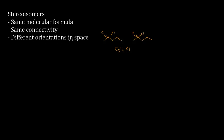Now if we analyze their orientations in space, notice something funky going on: this chlorine is pointed towards me while this chlorine is pointed away from me. And this hydrogen is pointed away from me, but over here it's pointed towards me. So they do indeed have different orientations in space, and because of that they are stereoisomers. Now remember that stereoisomers have stereocenters.